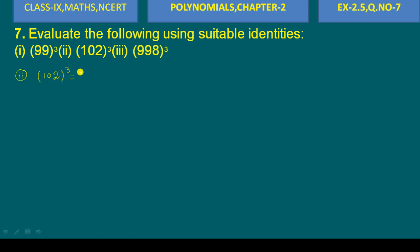We need to evaluate this using a suitable identity. We write 102 as 100 plus 2, so we have (100 + 2) to the power whole cube. The identity we will apply is (a + b) whole cube.